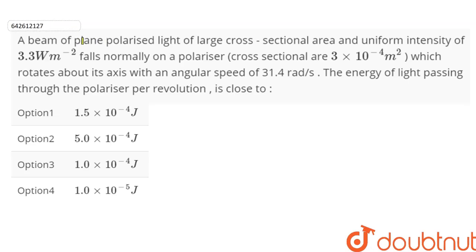A beam of plane polarized light of large cross-sectional area and uniform intensity of 3.3 watt per meter square falls normally on a polarizer having cross-sectional area of 3 into 10 to the power minus 4 meter square, which rotates about its axis with an angular speed of 31.4 radian per second. The energy of light passing through the polarizer per revolution is close to: option 1: 1.5×10⁻⁴ J, option 2: 5×10⁻⁴ J, option 3: 1×10⁻⁴ J, option 4: 1×10⁻⁵ J.